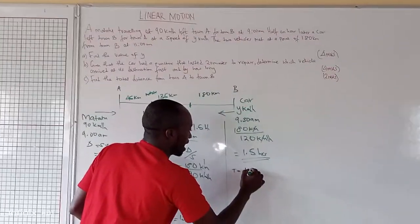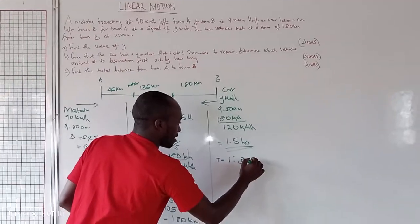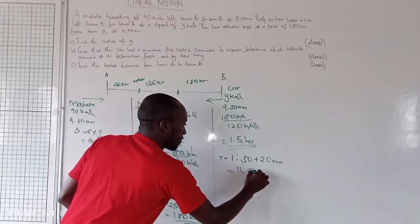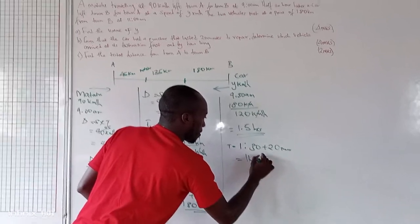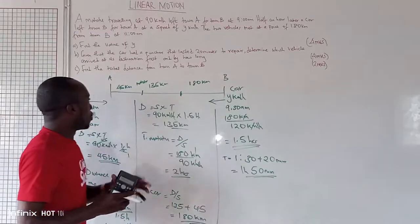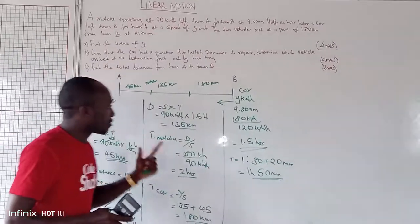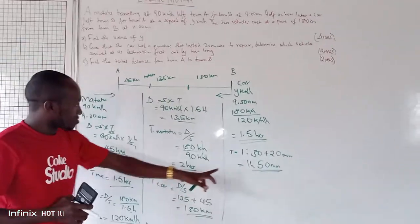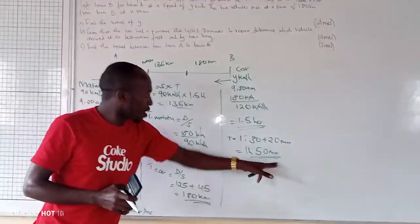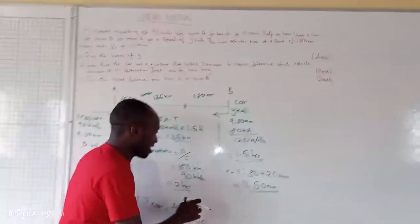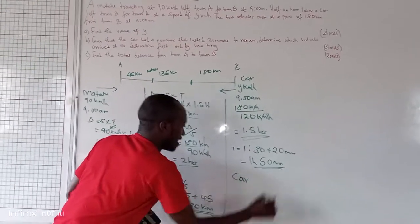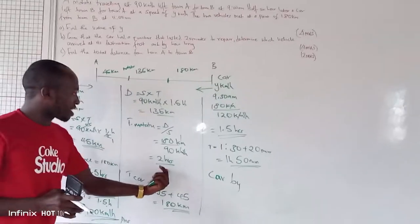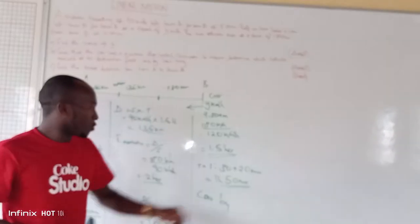The matatu took 2 hours from the meeting point to reach town B, while the car took 1 hour 50 minutes including the puncture. Therefore, the car arrived at its destination first — town A — by 10 minutes.